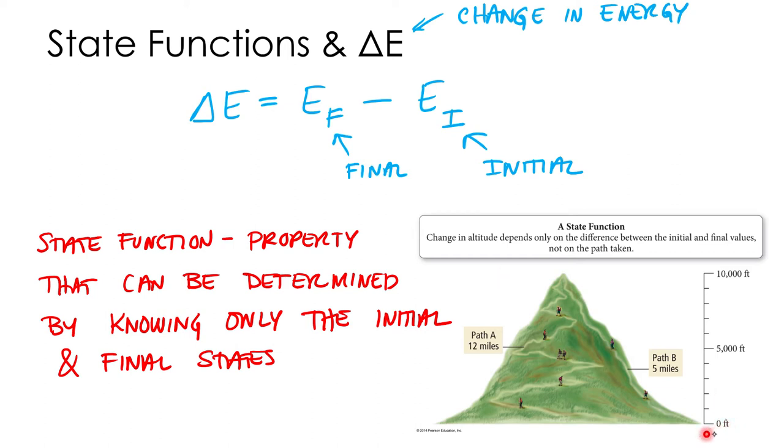Okay. The two measurements would be elevation change. How much your elevation change. Change in elevation. Or change in distance. How far you traveled. The elevation change is an example of a state function. Doesn't matter which path you took. If you started at the bottom and ended up at the top your elevation changed 10,000 feet. Didn't matter what happened in the middle.